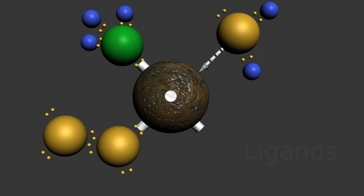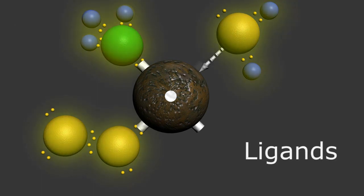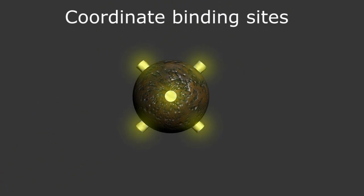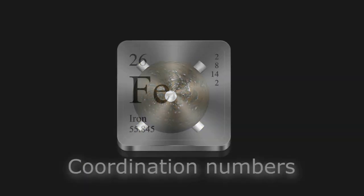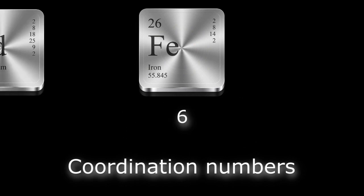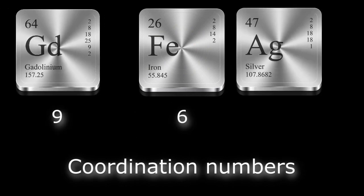The donating molecules are called ligands and each metal atom has a coordination number that will determine how many sites are available for ligand binding. Iron has a coordination number of six, gadolinium has nine, and our silver atom has two.